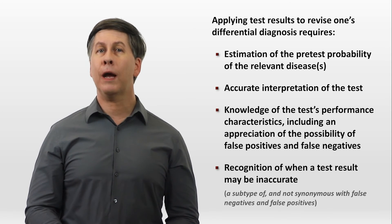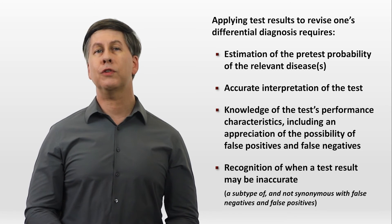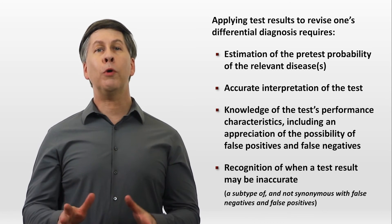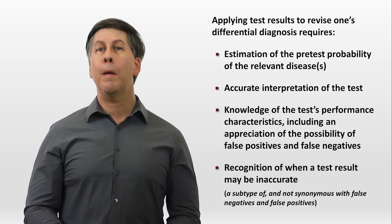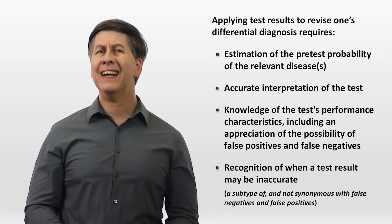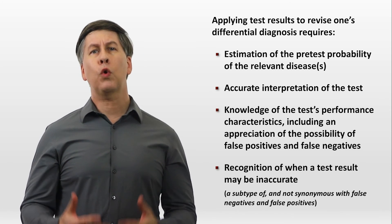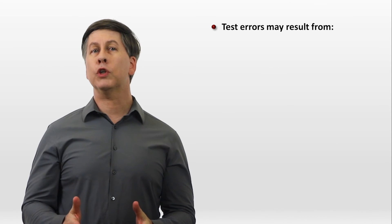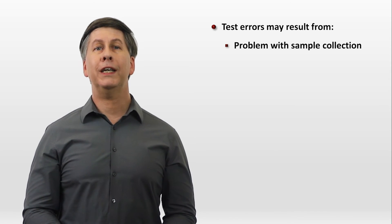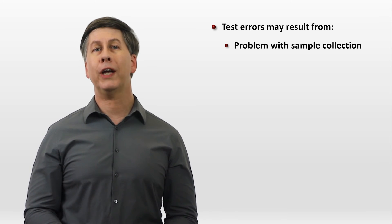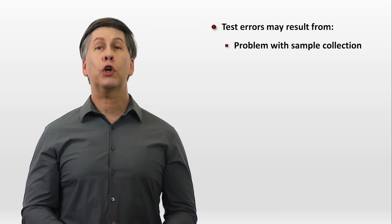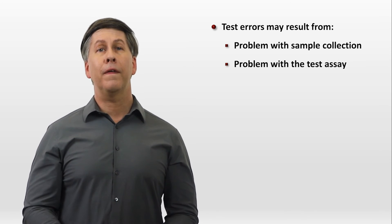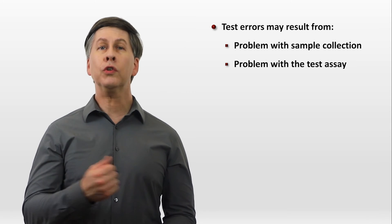Inaccurate test results is a subtype of and not synonymous with false negatives and false positives. For example, a normal AM cortisol level in a person with adrenal insufficiency may be a false negative, but not because it's a test error per se, but rather because a one-time cortisol level is just not a good test in general for the disease. But sometimes there is a problem with a specific patient's test, and that is a test error. Such test errors may result from a problem with the sample collection, for example, seeing an extremely low sodium level in a patient whose blood was checked downstream from an infusion of IV fluids. There could be a problem with a test assay in the lab, and the test could have been collected or resulted on the wrong patient.